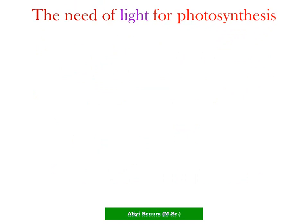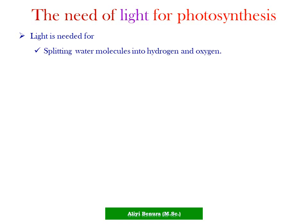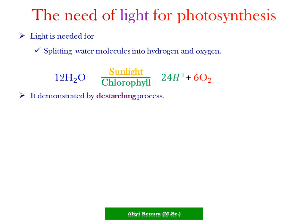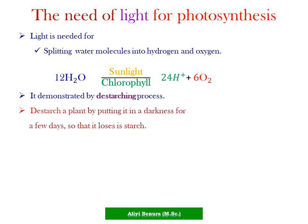The need of light for photosynthesis. Light is needed for splitting water molecules into hydrogen and oxygen, as shown in the chemical equation — water molecules in the presence of sunlight split into hydrogen molecules and oxygen molecules. This process can be demonstrated by destarching a plant — placing it in darkness for a few days so it loses its starch. Light is also essential for plants to grow and survive.